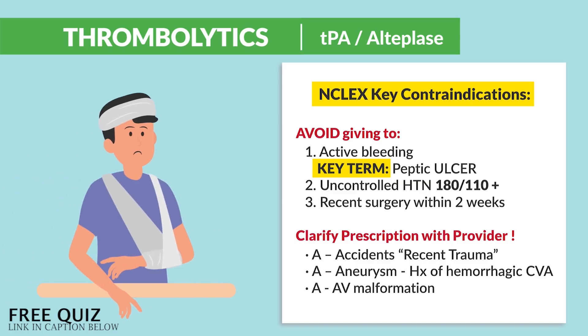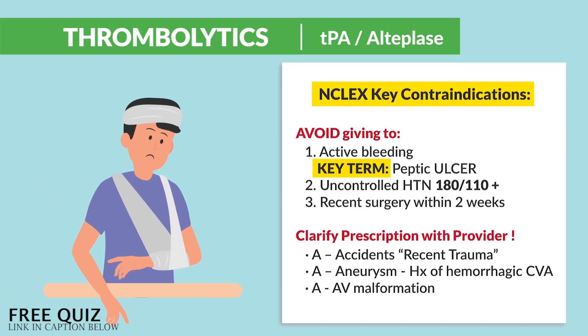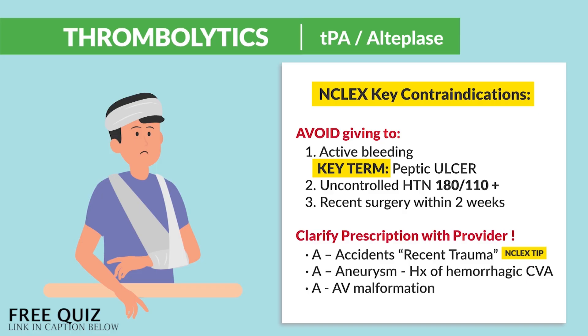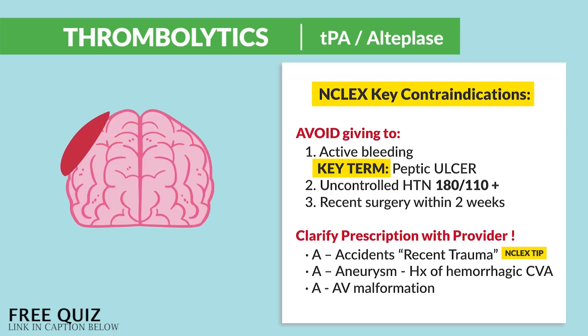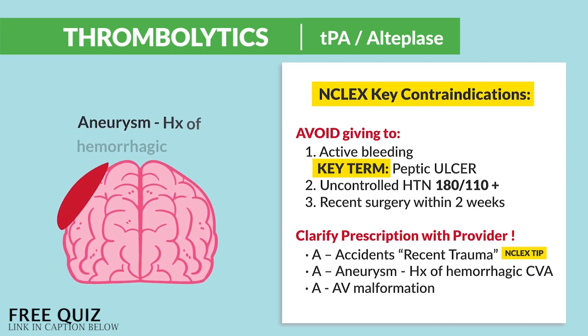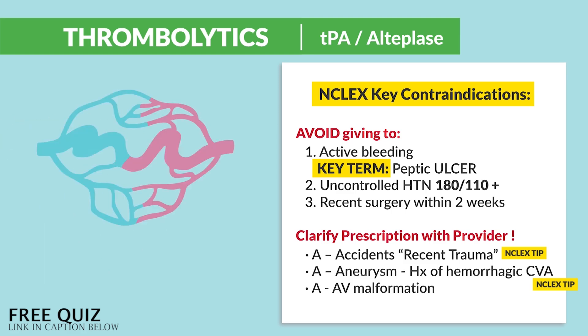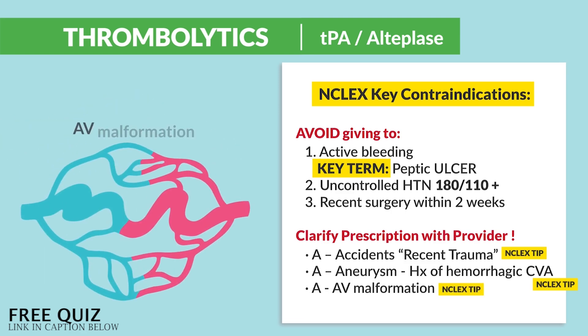And lastly, the three A's: A for accidents or recent traumas; A for aneurysm or history of hemorrhagic CVA — a.k.a. a brain bleed from a stroke; and A for AV malformations.